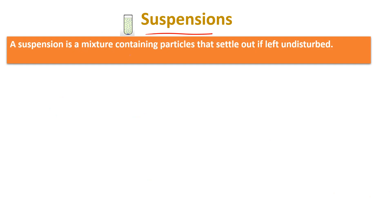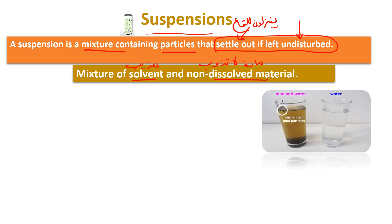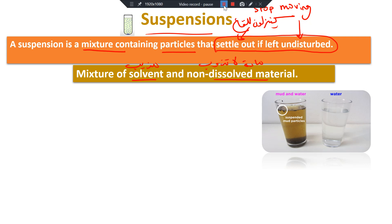So what is the definition of a suspension? A suspension is a mixture containing particles that settle out if left undisturbed — إذا ما حركناهم. The mixture is a solvent — مذيب أو سائل — with a non-dissolved material. An example is mud and water: if we put sand in water, shake it, and leave it, we find that the sand settles to the bottom.